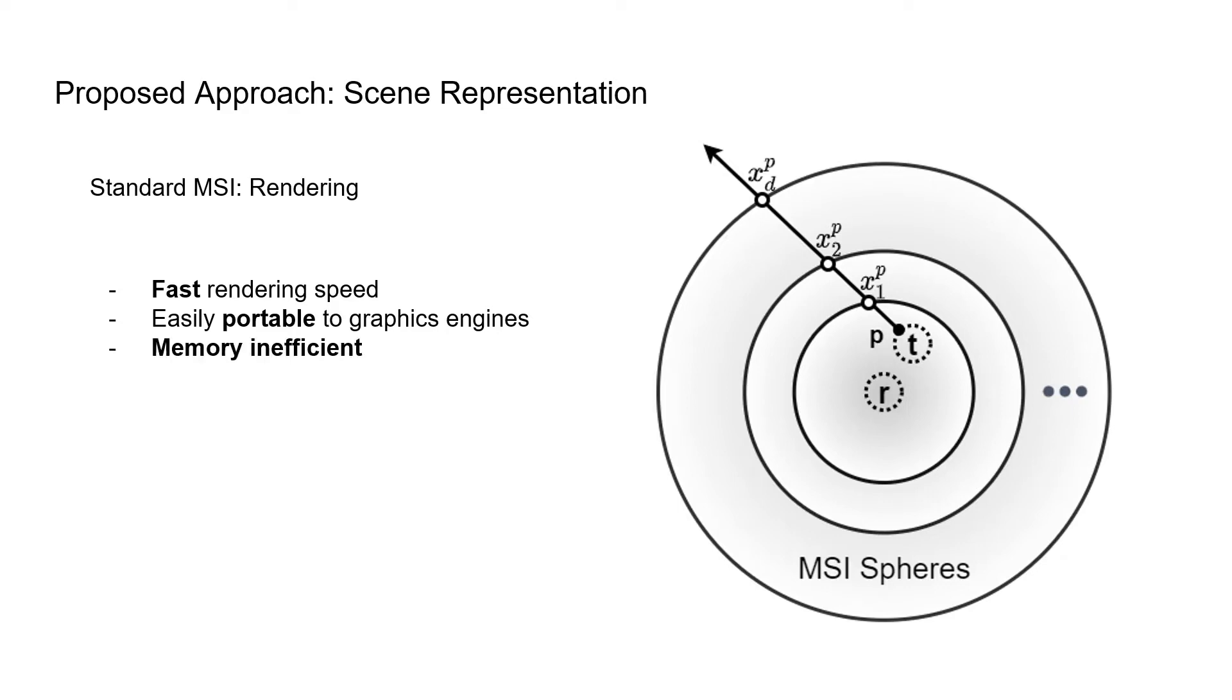However, the appearance component of MSIs has a memory complexity that is linear in both number of spheres and dimensionality of color features. This makes using high-dimensional color features infeasible. High-dimensional features are necessary to alleviate rendering artifacts and modeling view-dependent effects such as reflections. Overall, current MSI-based approaches are less accurate than implicit methods such as NERF.